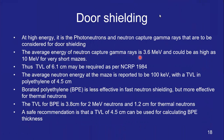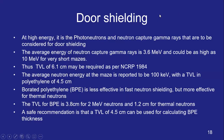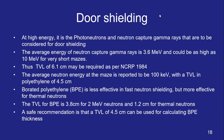At high energy, door shielding must consider photoneutrons and neutron capture gamma rays. The average energy of neutron capture gamma rays is 3.6 MeV and can go as high as 10 MeV for very short mazes. A TVL of 6.1 centimeters of lead may be required per NCRP 1984. The average neutron energy at the maze is about 100 keV with a TVL in polythene of 4.5 centimeters. Borated polythene is less effective for fast neutrons but more effective for thermal neutrons. The TVL for borated polythene is about 3.8 centimeters for 2 MeV neutrons and 1.2 centimeters for thermal neutrons, so 4.5 centimeters is a safe recommendation for calculating BPE thickness.